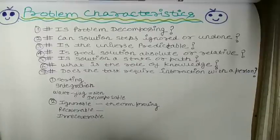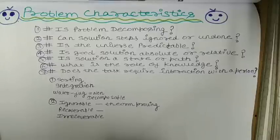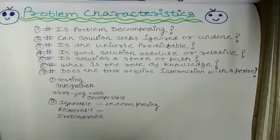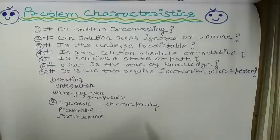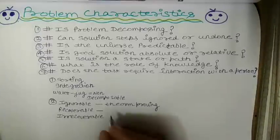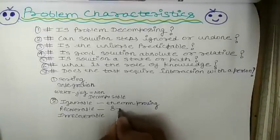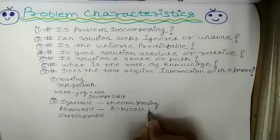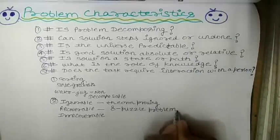Recoverable problems are problems where we are noting our steps. We can undo our steps and move back to a previous state. If we are not getting the result that gives us the final answer, we move back to the previous step, and then further back. We can only do this if we are noting down our steps. An example is the 8-puzzle problem, where we can undo our steps.